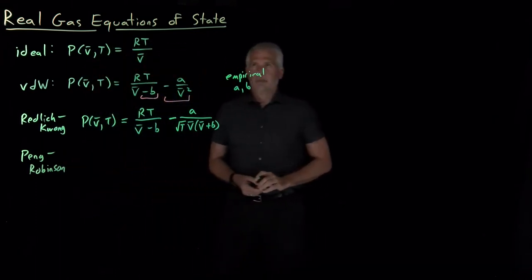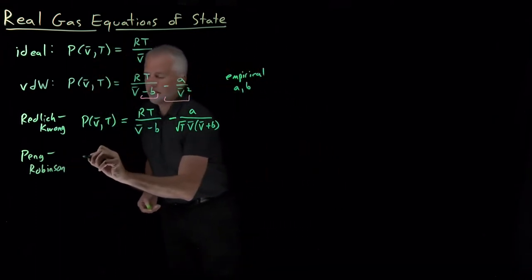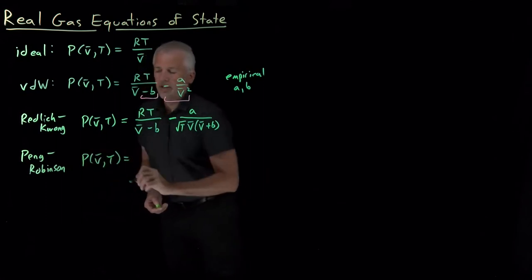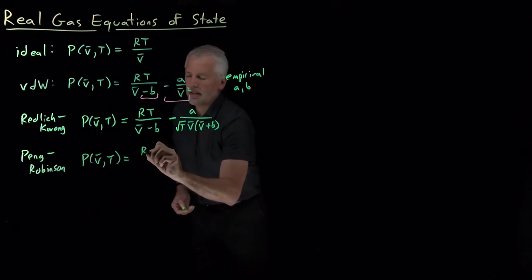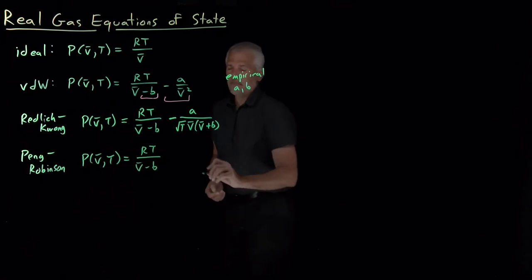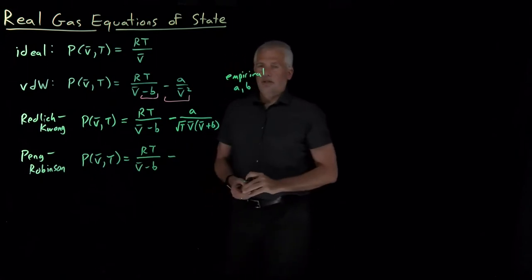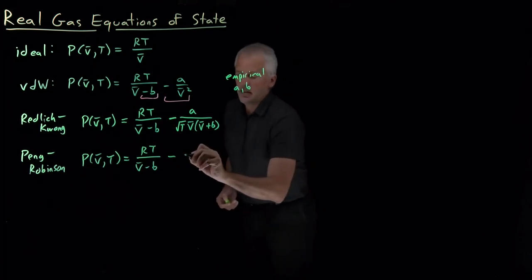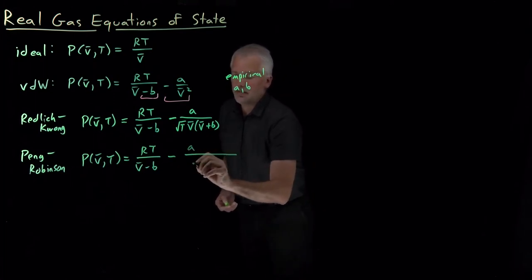It's called the Peng-Robinson model. Once again, we can predict the pressure from V bar and T. The first term looks exactly the same. We're going to subtract a term that's due to the intermolecular interactions. That term still has an A on top. It still has some V-squareds on the bottom.